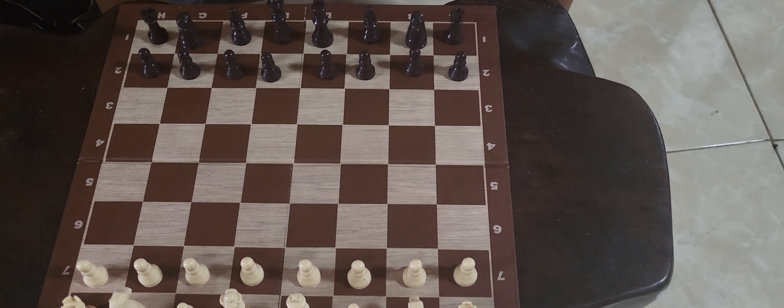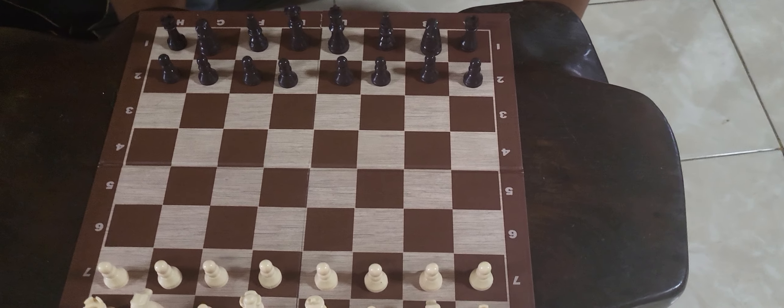First, they will move their pawn, the king's pawn, to d5.